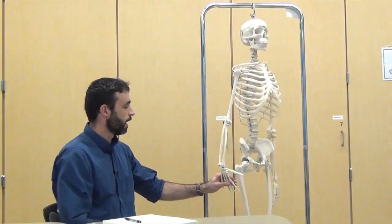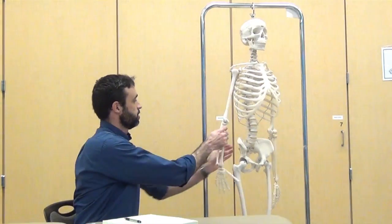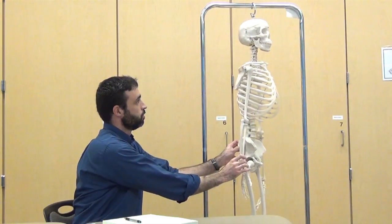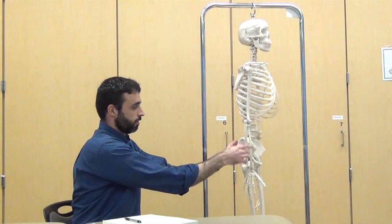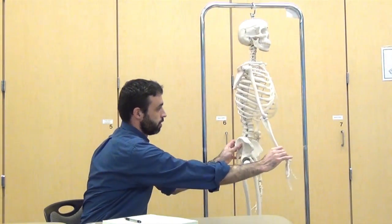The body also has pendulums associated with it. One place we can easily envision a pendulum is the shoulder. Imagine an individual carrying a briefcase or small suitcase in this hand. As they're walking, their arm is going to naturally swing.